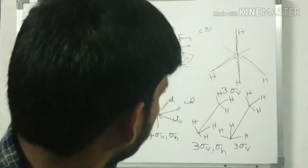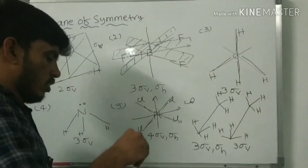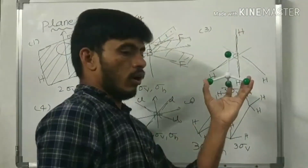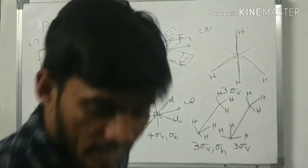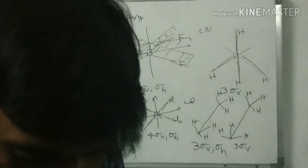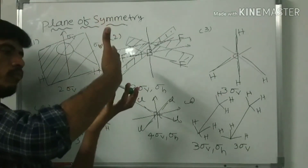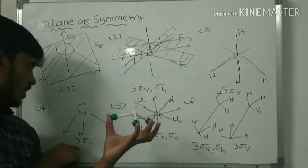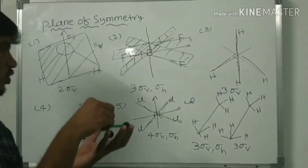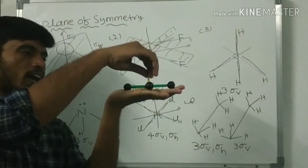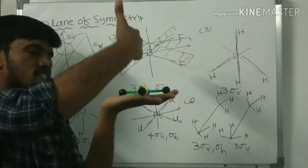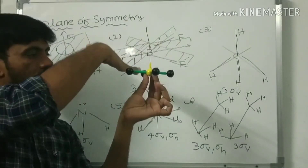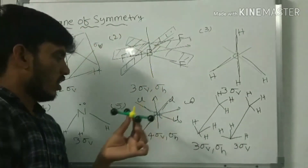Methane molecule has three sigma v planes. Ammonia molecule has three sigma v vertical planes. Platinum Cl₄²⁻ has four sigma v planes and one sigma h horizontal plane, where all five atoms are bisected by the horizontal plane.